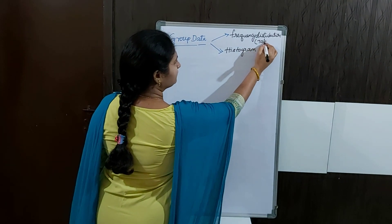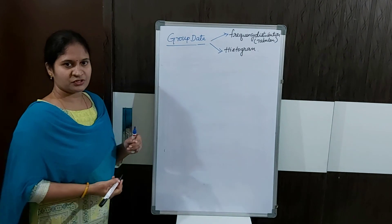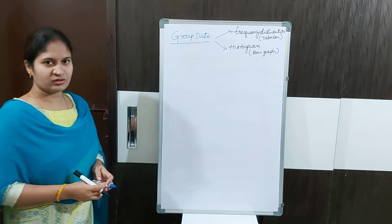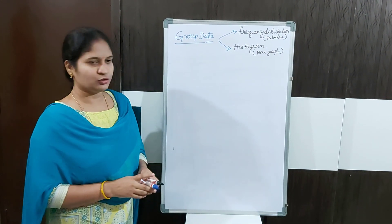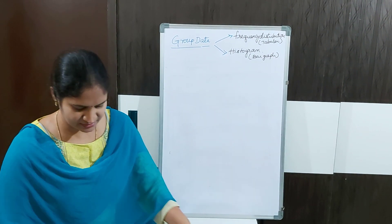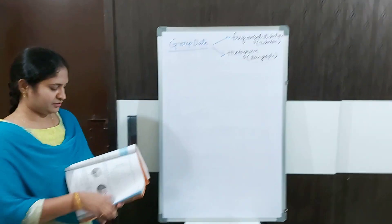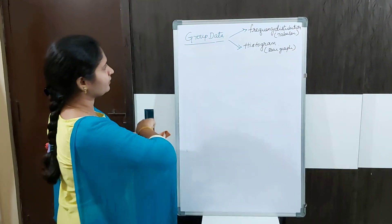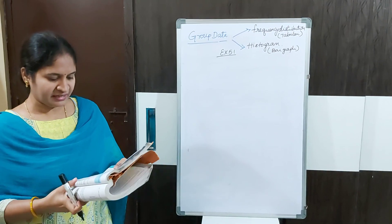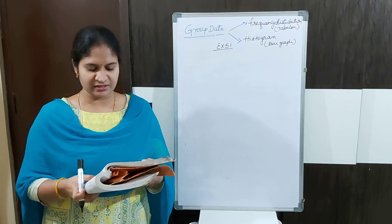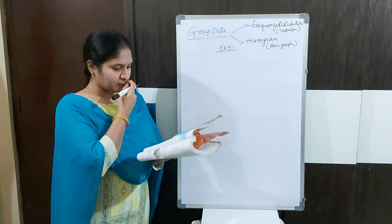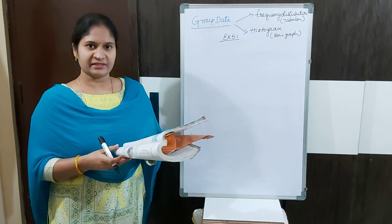If it is a tabular form we use a frequency distribution table; if it is a bar graph we use a histogram. Let us talk about grouped data. I am taking one example from Exercise 5.1. The weekly wages in rupees of 30 workers in a factory — the weekly wages means the salary of the workers in a week. So here we are talking about 30 workers at a time.